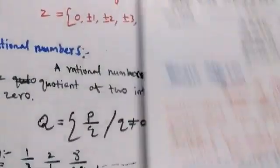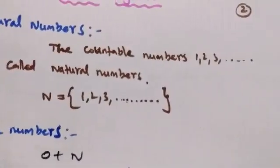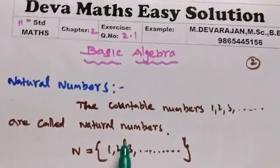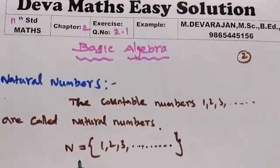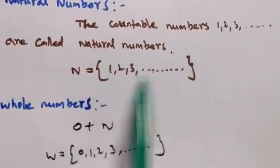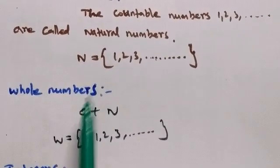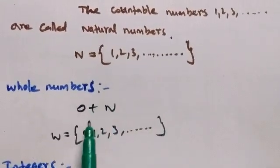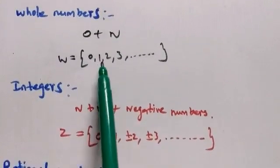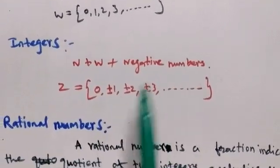Let's look at natural numbers. Natural numbers are the countable numbers: 1, 2, 3, etc. They are denoted by capital N. Natural numbers are divided into whole numbers, which include 0, 1, 2, 3, etc.